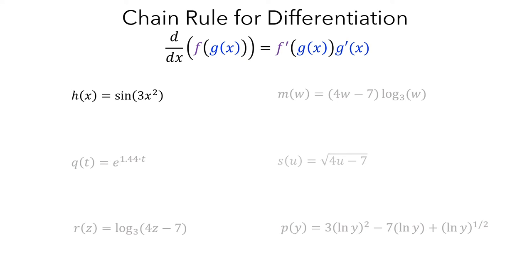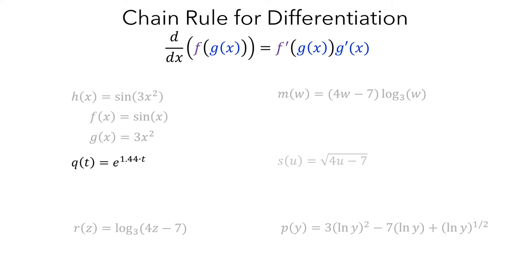For h, it's probably not too difficult to figure out that the outer function would be sin, and the argument would be 3x squared, because if you replace the argument of f with g, you'd get sin. For q, it might be a little more difficult to see, but you can use f equals e to the t as your outside function, and g equals 1.44t as your argument. So q is a composition of functions, and you could use the chain rule to compute its derivative.